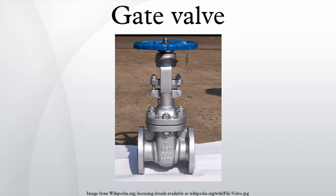Another type of bonnet construction in a gate valve is the pressure seal bonnet. This construction is adopted for valves for high-pressure service, typically in excess of 2250 psi. The unique feature of the pressure seal bonnet is that the body-bonnet joint seal improves as the internal pressure in the valve increases, compared to other constructions where the increase in internal pressure tends to create leaks in the body-bonnet joint.